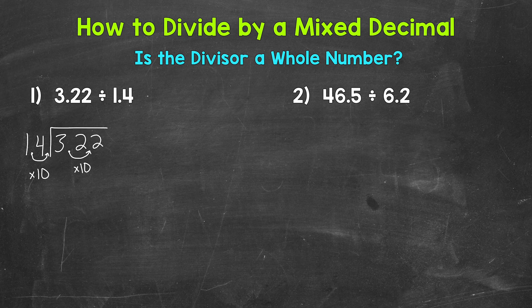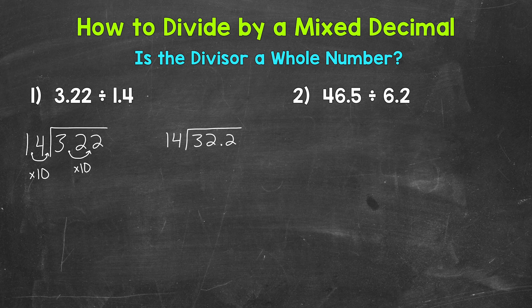The division process is: divide, multiply, subtract, bring down, repeat. We rewrite our new equivalent problem with the whole divisor: our dividend is 32 and 2 tenths divided by 14. Now, is the divisor a whole number? Yes — so we can bring the decimal straight up into our answer.